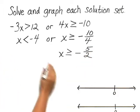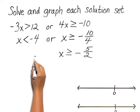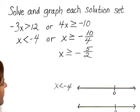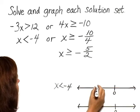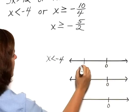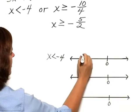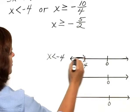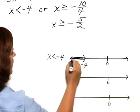Now before we write this as the solution set, let's graph and see what the solution set looks like. To graph it, we can start by graphing each of these inequalities separately. So we'll start by graphing x is less than negative 4, and we mark off negative 4 here and shade in the numbers less than negative 4.